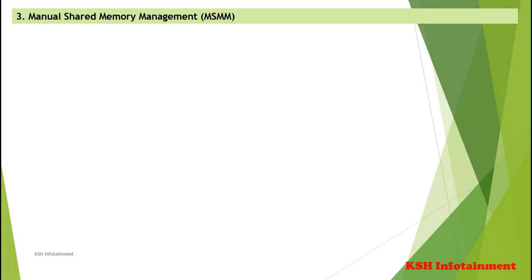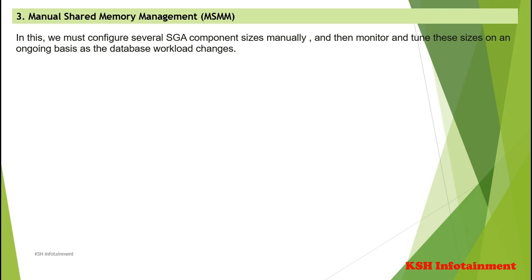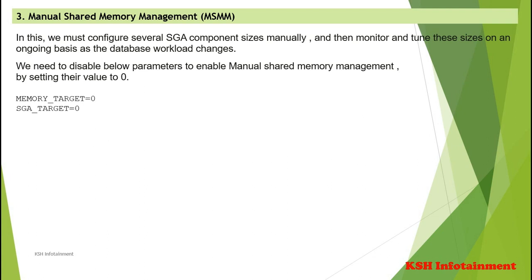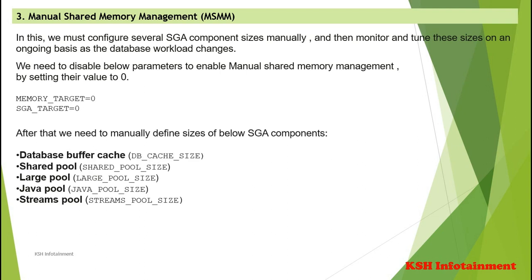In Manual Shared Memory Management, we must configure several SGA component sizes manually and then monitor and tune these sizes on an ongoing basis as the database workload changes. To enable Manual Shared Memory Management, we need to disable the following parameters by setting their values to 0: memory_target — which disables Automatic Memory Management — and SGA_target — which disables Automatic Shared Memory Management. After that, we need to manually define the sizes of the SGA components.